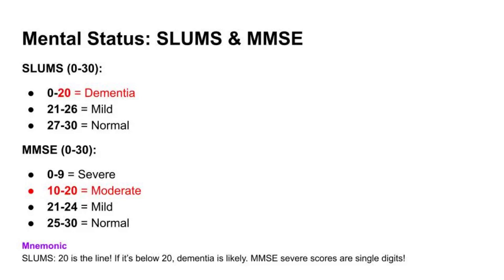SLUMS and MMSE are used to assess cognitive function — in other words, mental status. SLUMS is scored between 0 and 30. The lower the score, the more likely dementia is. 0 to 20 equals dementia, 21 to 26 equals mild, and 27 to 30 equals normal.